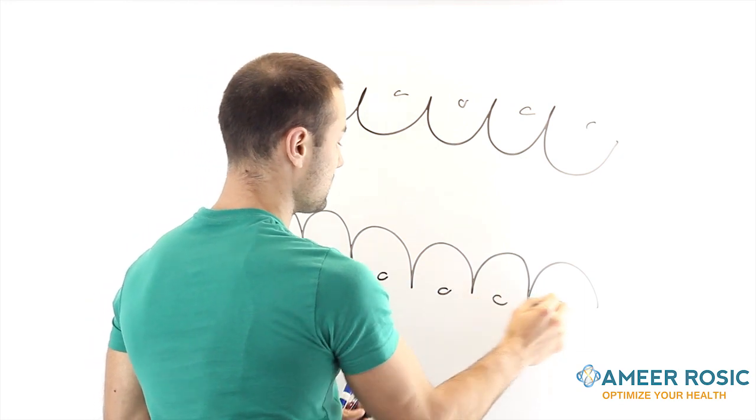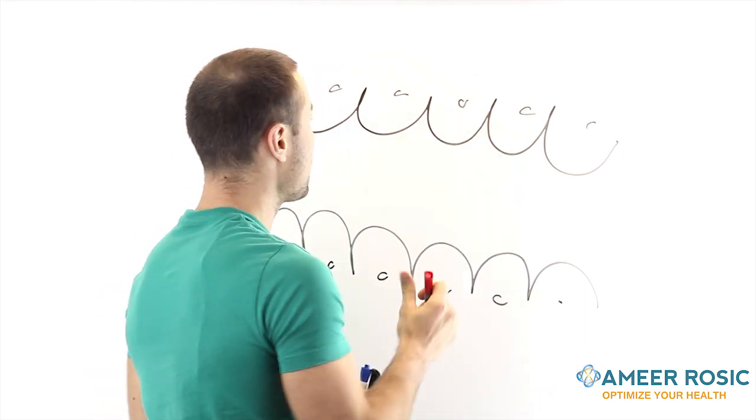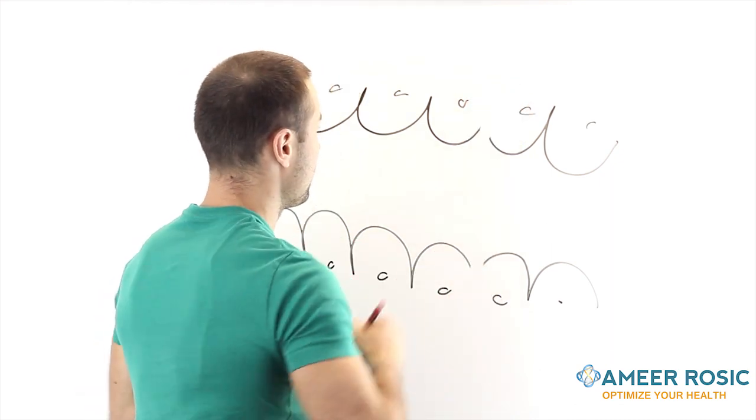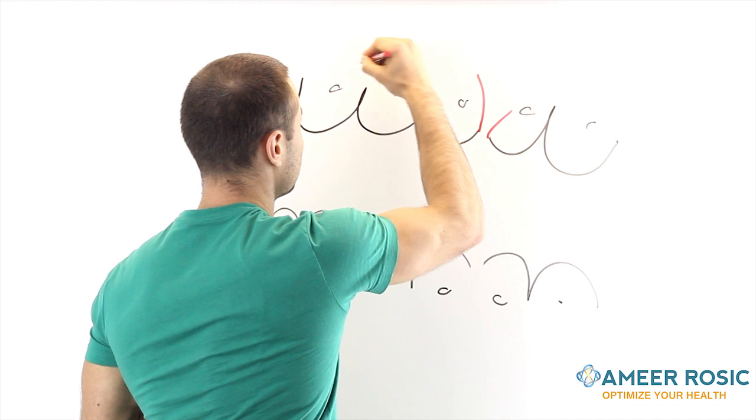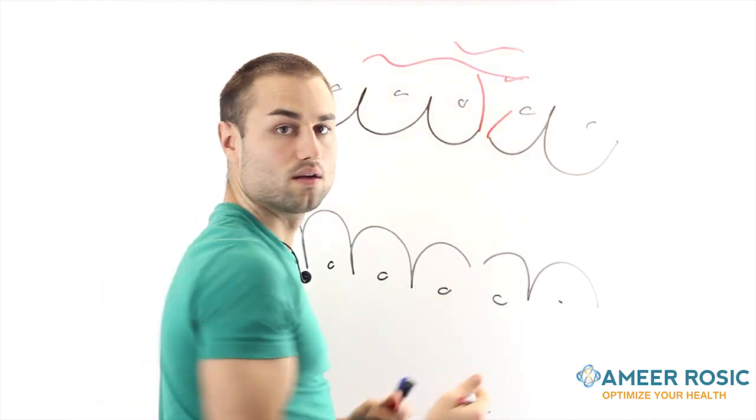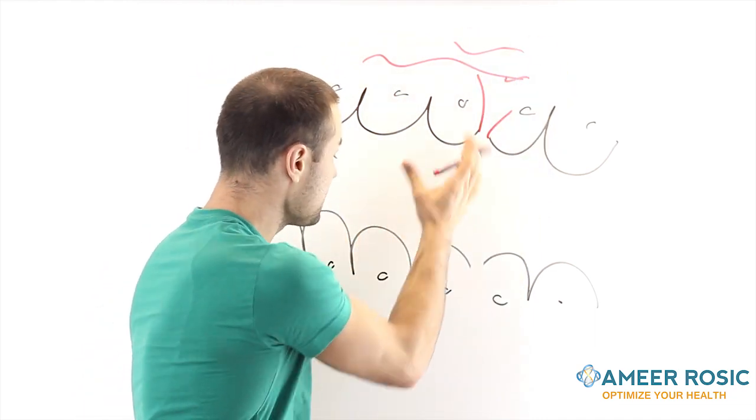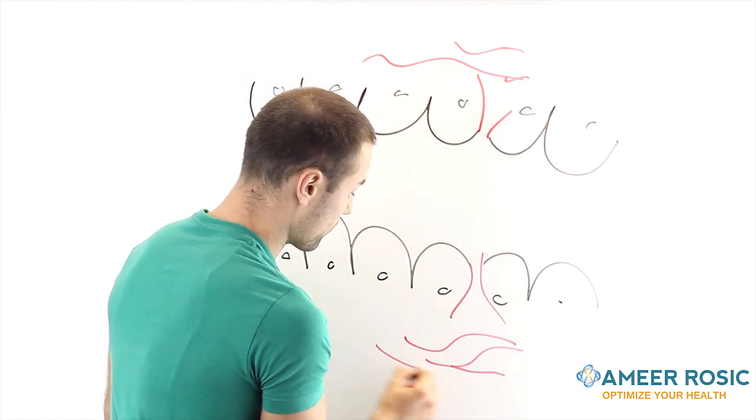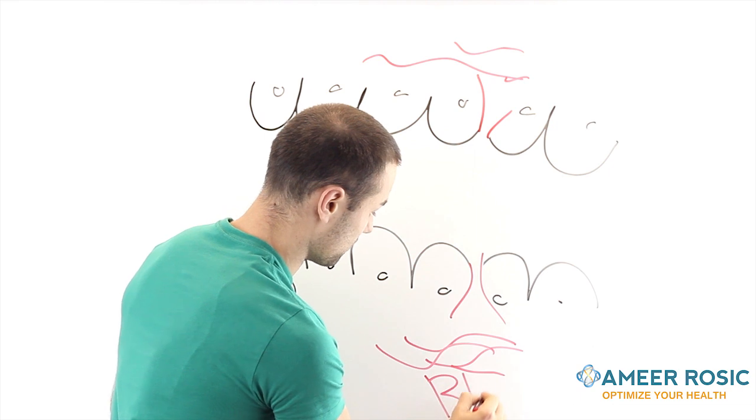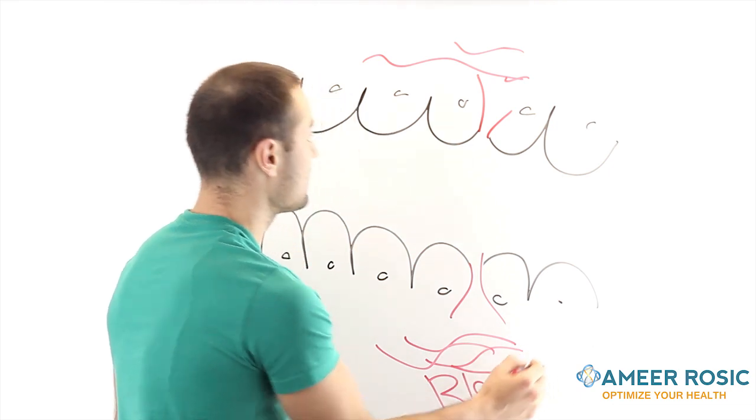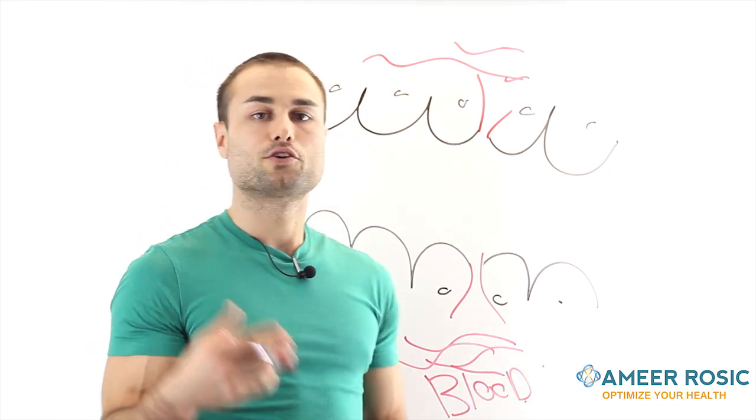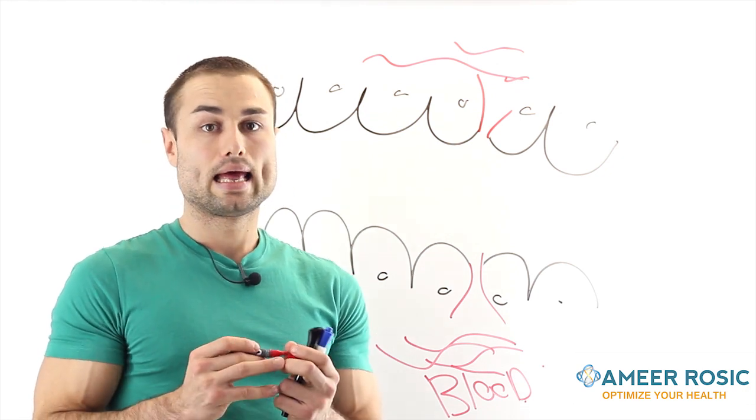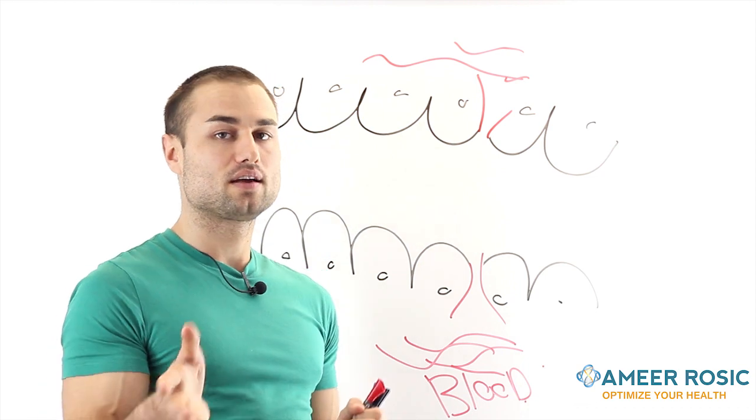So that means when you have leaky gut, there's holes right here. So you got holes in your body and it's going right to your bloodstream. That's your blood and everything that you're eating right now or the poisonous foods that you're eating are escaping and going right to your blood. So we'll draw a big B for blood, right? That's not good. So we already know this, that certain foods, certain lifestyle and certain things in your life do cause leaky gut. The question remains is how are you going to fix it?